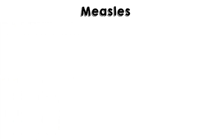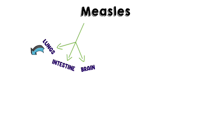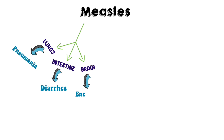Now let's talk about the complications of measles. Measles can affect the lungs, intestines, and brain. In the lungs it can cause pneumonia; in the intestines it can cause diarrhea; and in the brain it can cause encephalitis.